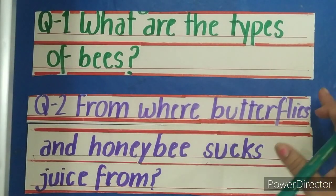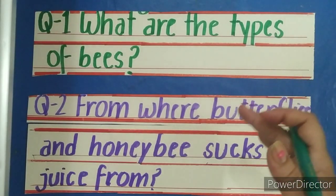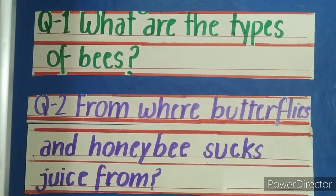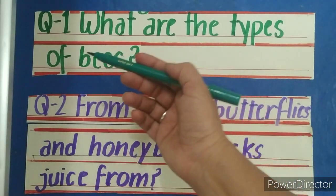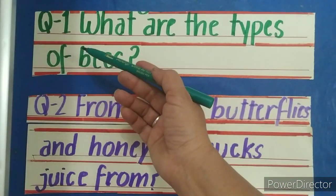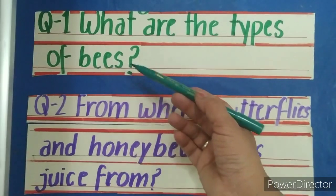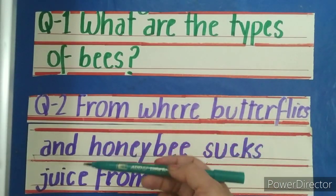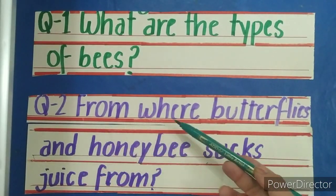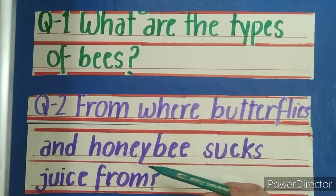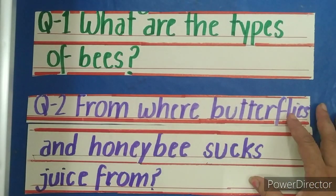And now kids, it is time for your homework. Please write down these questions in your notebook properly. Our first question is: What are the types of bees? And the second is: From where do butterflies and honeybees suck juice?